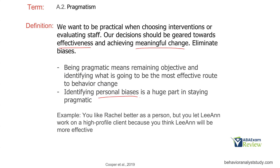Biases will prevent you from being pragmatic because you may recognize something more effective but let bias prevent you from making the right decision. For example, in staff management — you like Rachel better as a person, but you let Leanne work on a high-profile client because you think Leanne will be more effective. That may sound easy on paper, but in practice, if you're managing 20 technicians, you have an opinion on every single one. Being pragmatic means being objective and making decisions based on effectiveness.